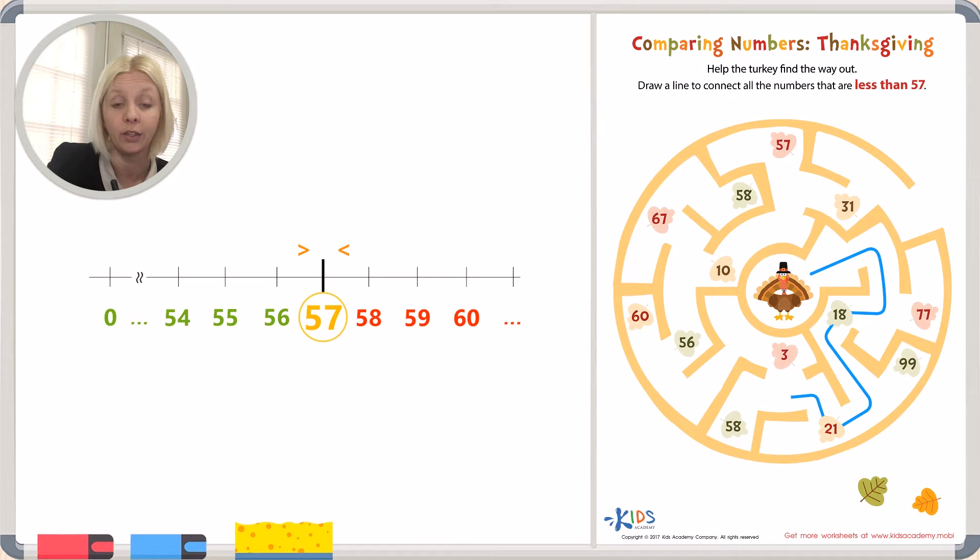58 is on this side of the number line. We don't want to go that way, so we're going to go up to 3. And then we're going to come through here and right through here.